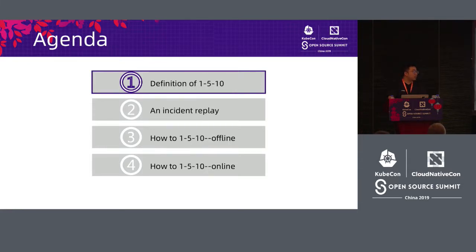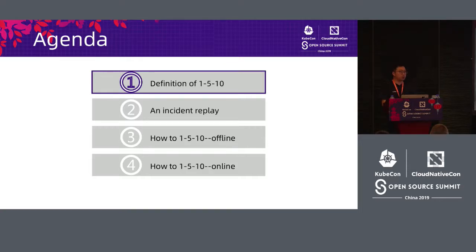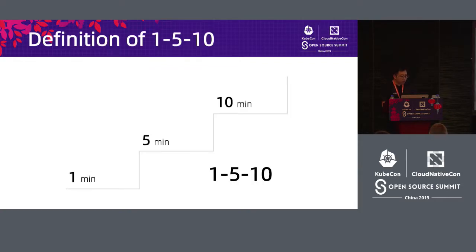We have identified the idea of 1, 5, and 10. There are four phases we will discuss: first, the definition of 1, 5, and 10; second, a simulated failure review covering what operations were done on the timeline and whether we reached our goals; third and fourth, through measures in procedure, tools, technology, and methods, how to achieve the goal of 1, 5, and 10 — in two directions: offline and online.